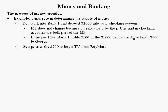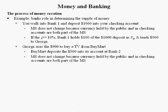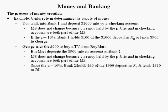Suppose George uses the $900 to buy a TV from BuyMart. BuyMart then deposits the $900 into its account at Bank 2. Again, money supply doesn't change at this point because currency held by the public and checking accounts are both part of the money supply.